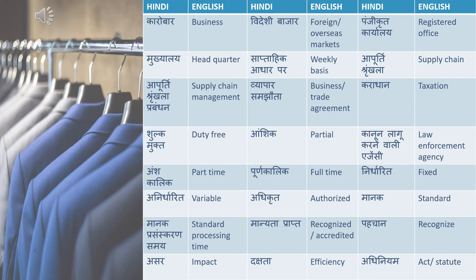Maanyata prapt means recognized or accredited. This always comes up in situations like 'hamaare company ko maanyata prapt hui hai' regarding selling a product and all that. Pahachan means recognize. Asar means impact — iska yahan asar hua hai, toh iska kya impact hua hai. Dakshata means efficiency.